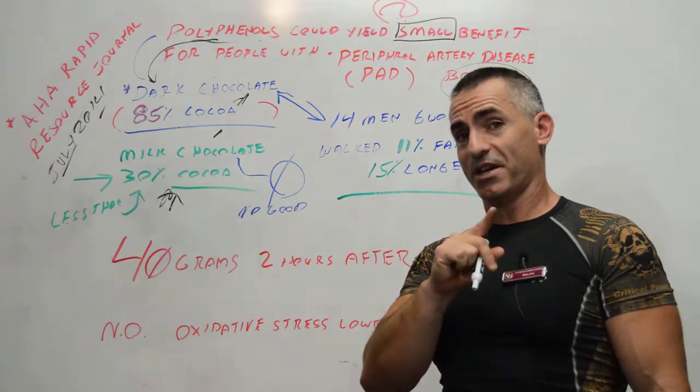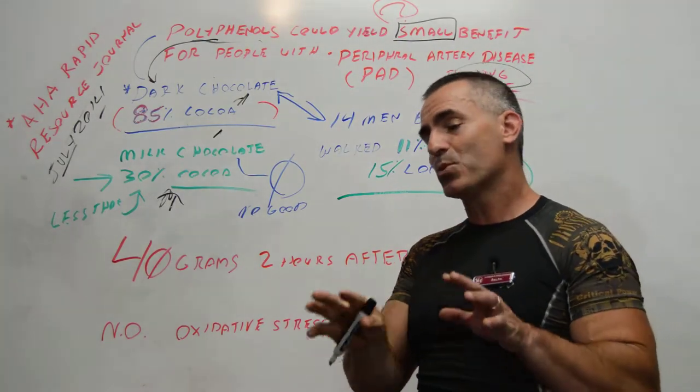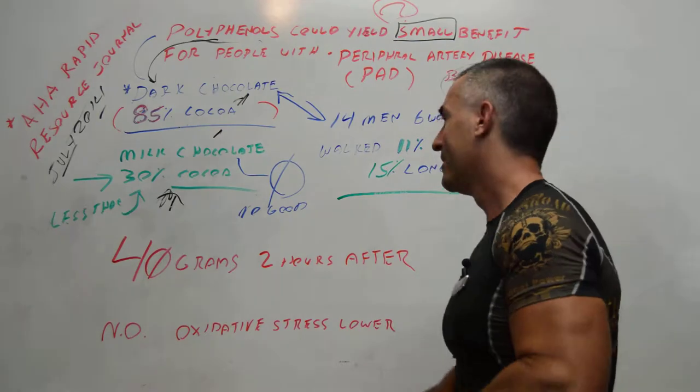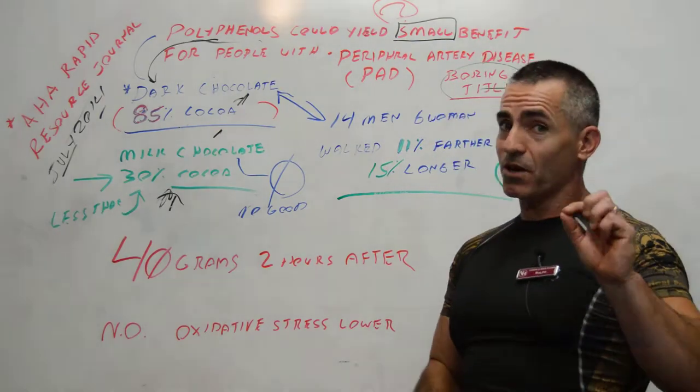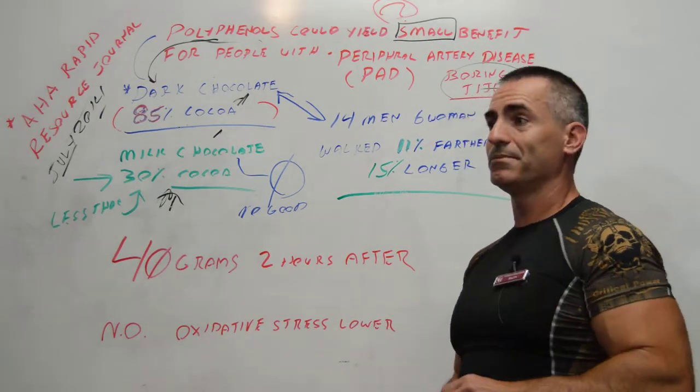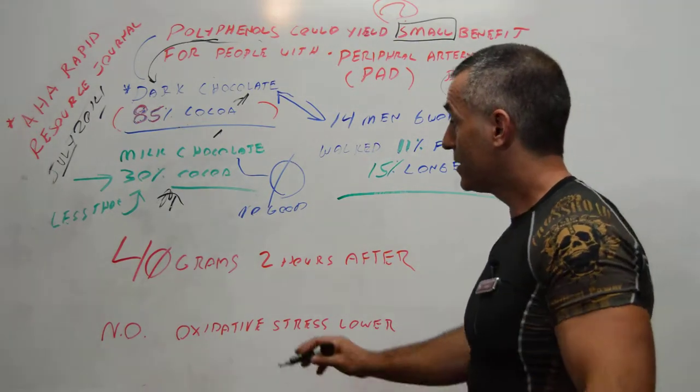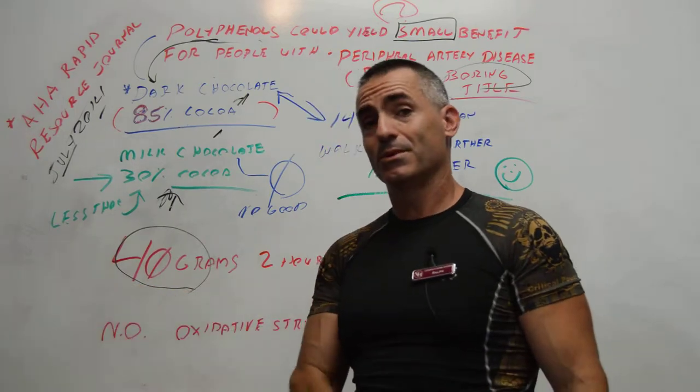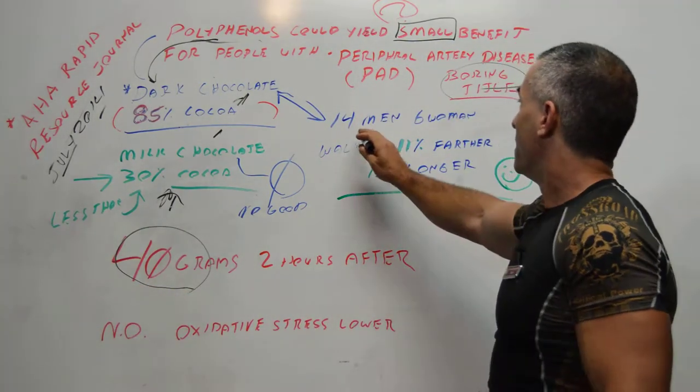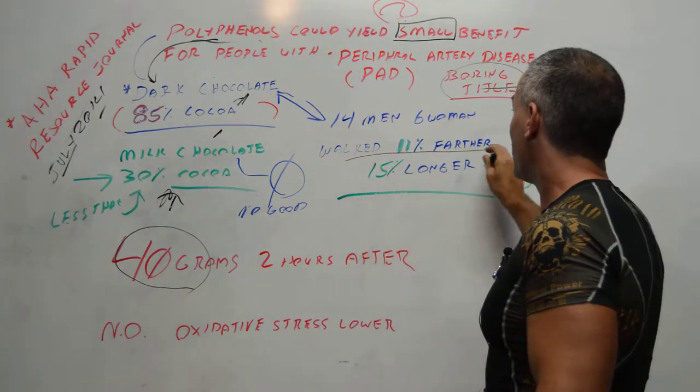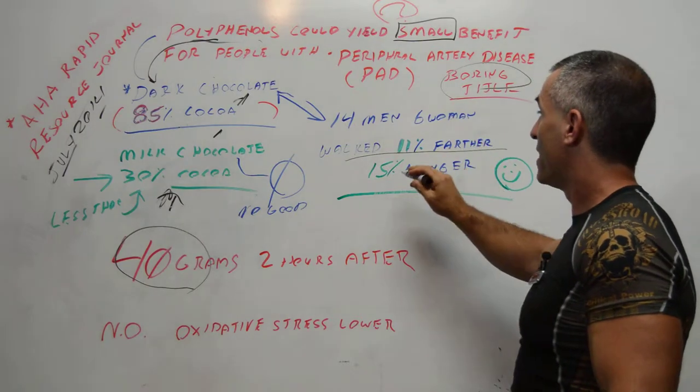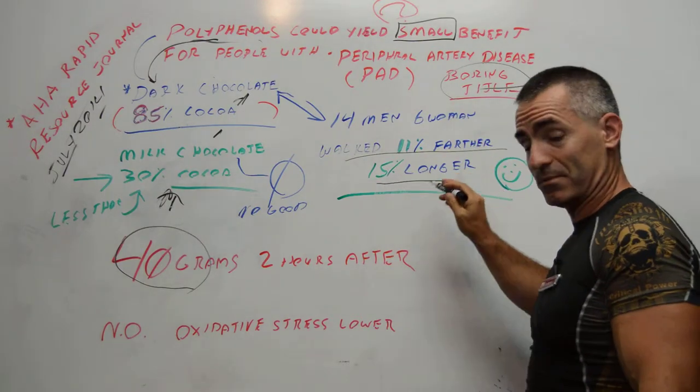And then they followed them two hours later. And this is where the subjective part comes into play. After eating dark chocolate, two hours later, they did a treadmill test. One day, 40 grams of dark chocolate resulted in this.